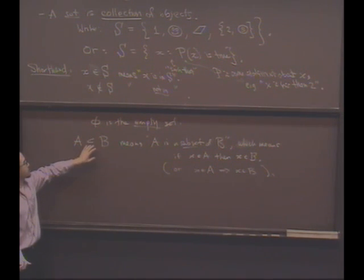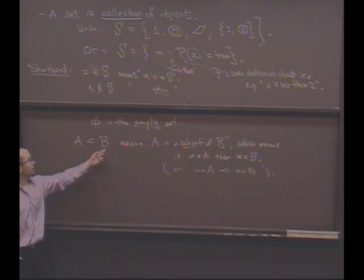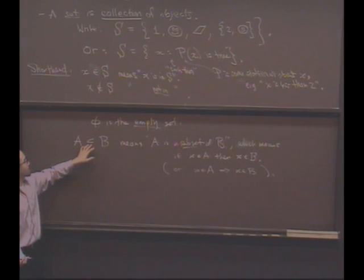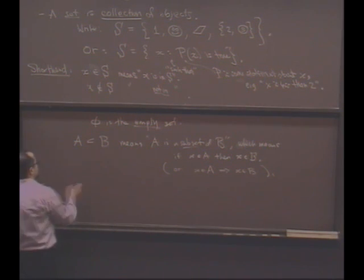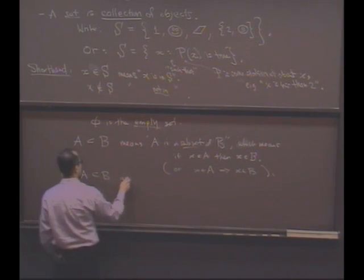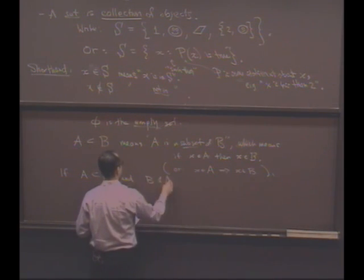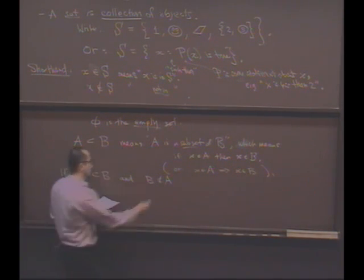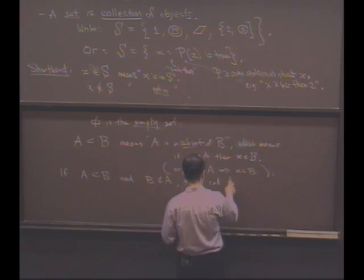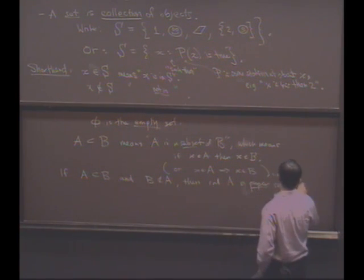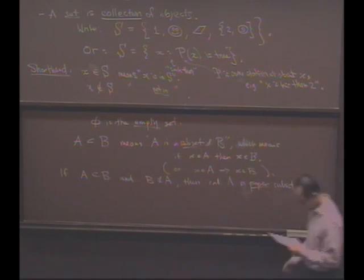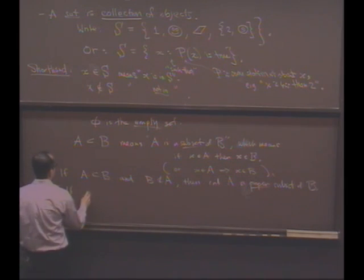One thing you do have to watch out for is that with this notation, generally this also includes the possibility that A and B are the same set. Some authors emphasize that by placing an equals underneath. If A is in B and B is not in A, that is one is a subset of the other but not vice versa, then we call A a proper subset of B.